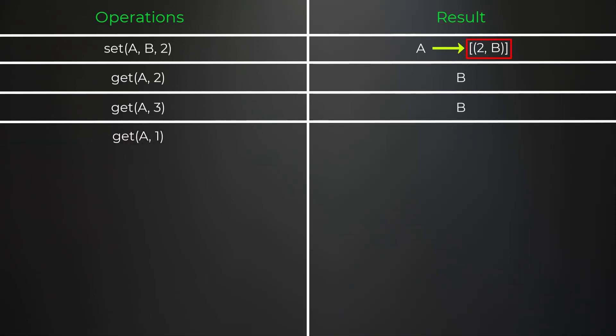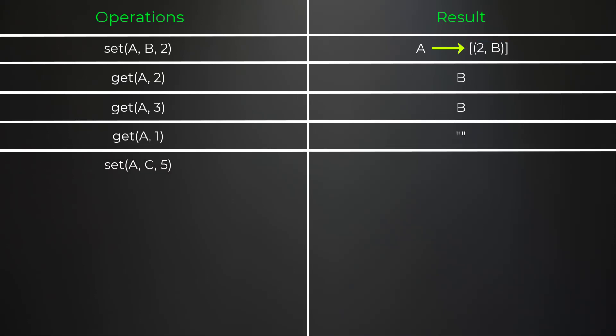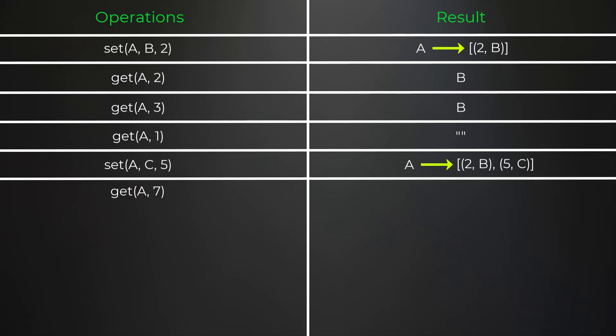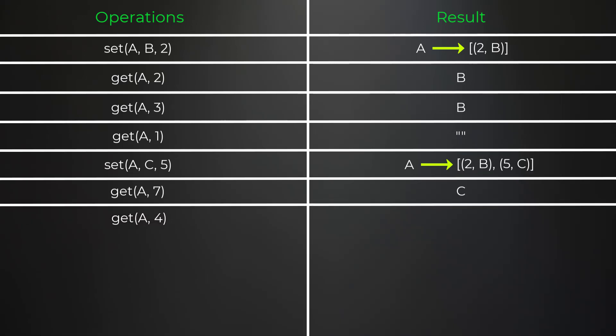A get of key 'a' at timestamp 1 returns an empty string because there are no timestamps less than or equal to 1. Next we call set with key 'a', value 'c', timestamp 5 — adding that tuple to our list. Since 5 is strictly increasing from 2, our list is sorted by timestamp. A get of key 'a' at timestamp 7 returns 'c' since 5 is the closest number less than or equal to 7.